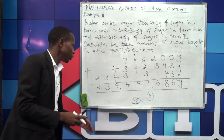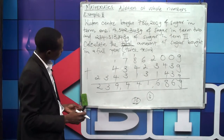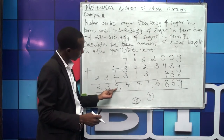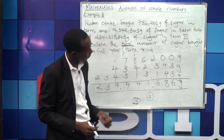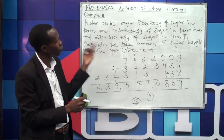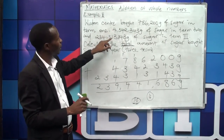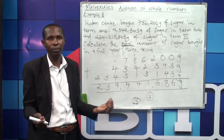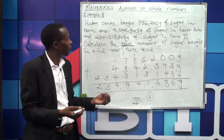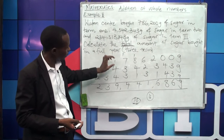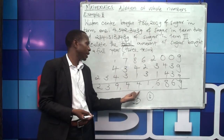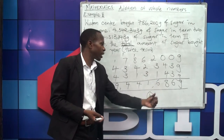Wisdom School bought about 239,441,686 grams of sugar in a year, or three terms. The first term they bought a smaller amount; the second term they increased; the third term they increased again — perhaps as the number of children increased, they also had to increase the food. This gives us the total: 239,441,686 grams.